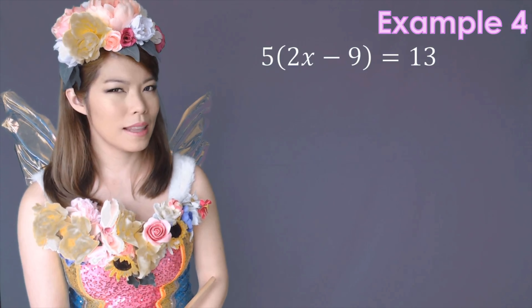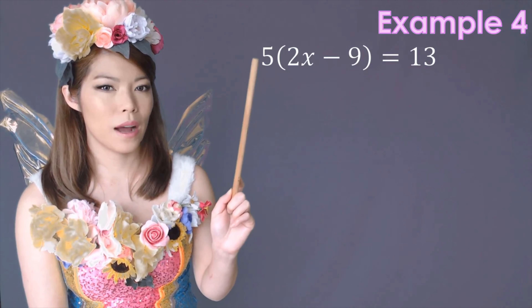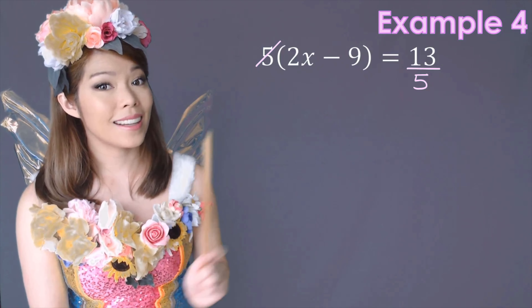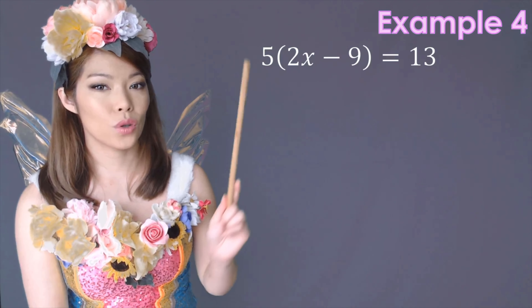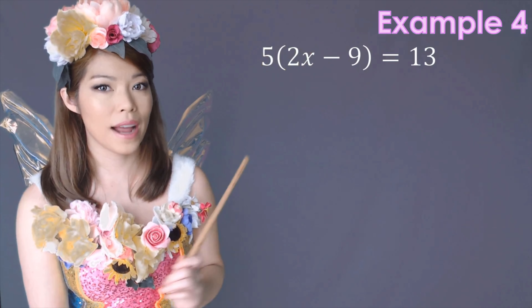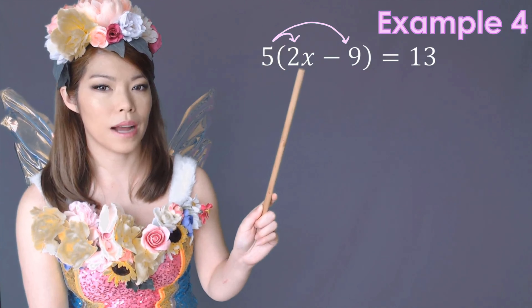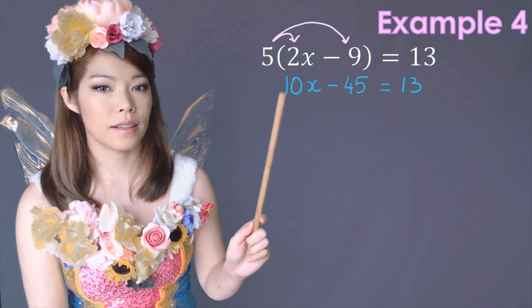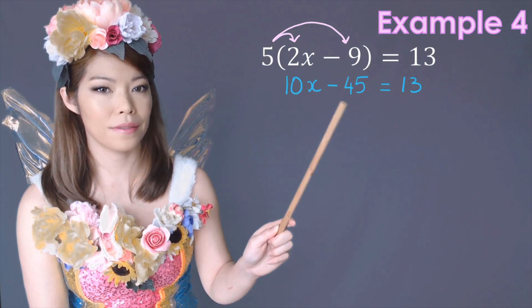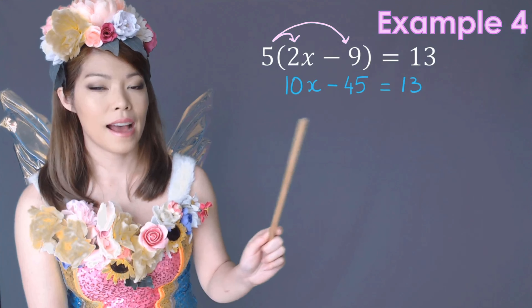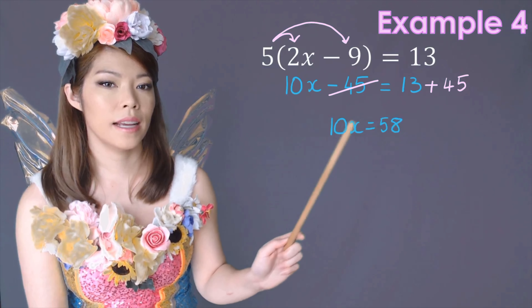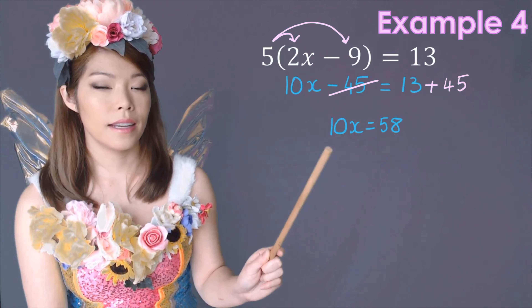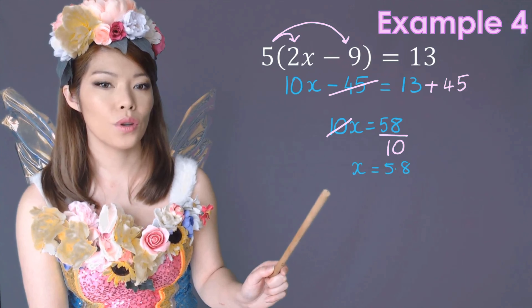Next example. This time we could divide both sides by 5, but 13 over 5 doesn't give a whole number and gets pretty ugly. So instead of bringing the 5 to the other side, we can expand the bracket. We multiply 5 by the first term and the second term. So 5 times 2x is 10x, and 5 times minus 9 is minus 45, equals 13. We need to get rid of the minus 45, so bringing it over gives plus 45. So now we have 10x equals 13 plus 45, which is 58. Lastly, divide both sides by 10, giving x equals 5.8.